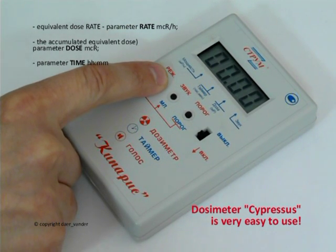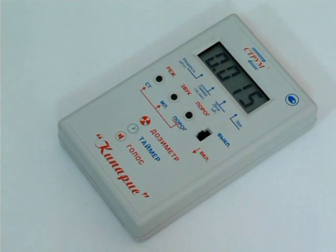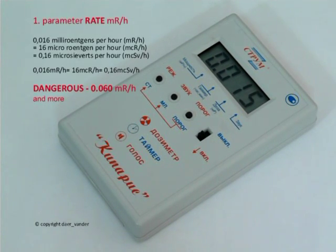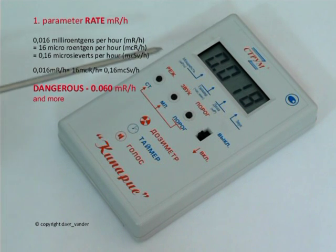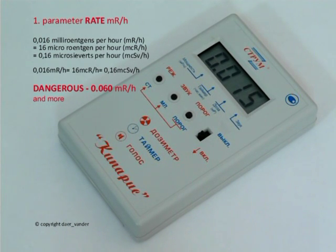Rate is the equivalent dose rate, indicated by a point after the first number. The device shows the intensity of radiation our body receives at the moment. It is the primary parameter and is displayed automatically when the device is turned on.